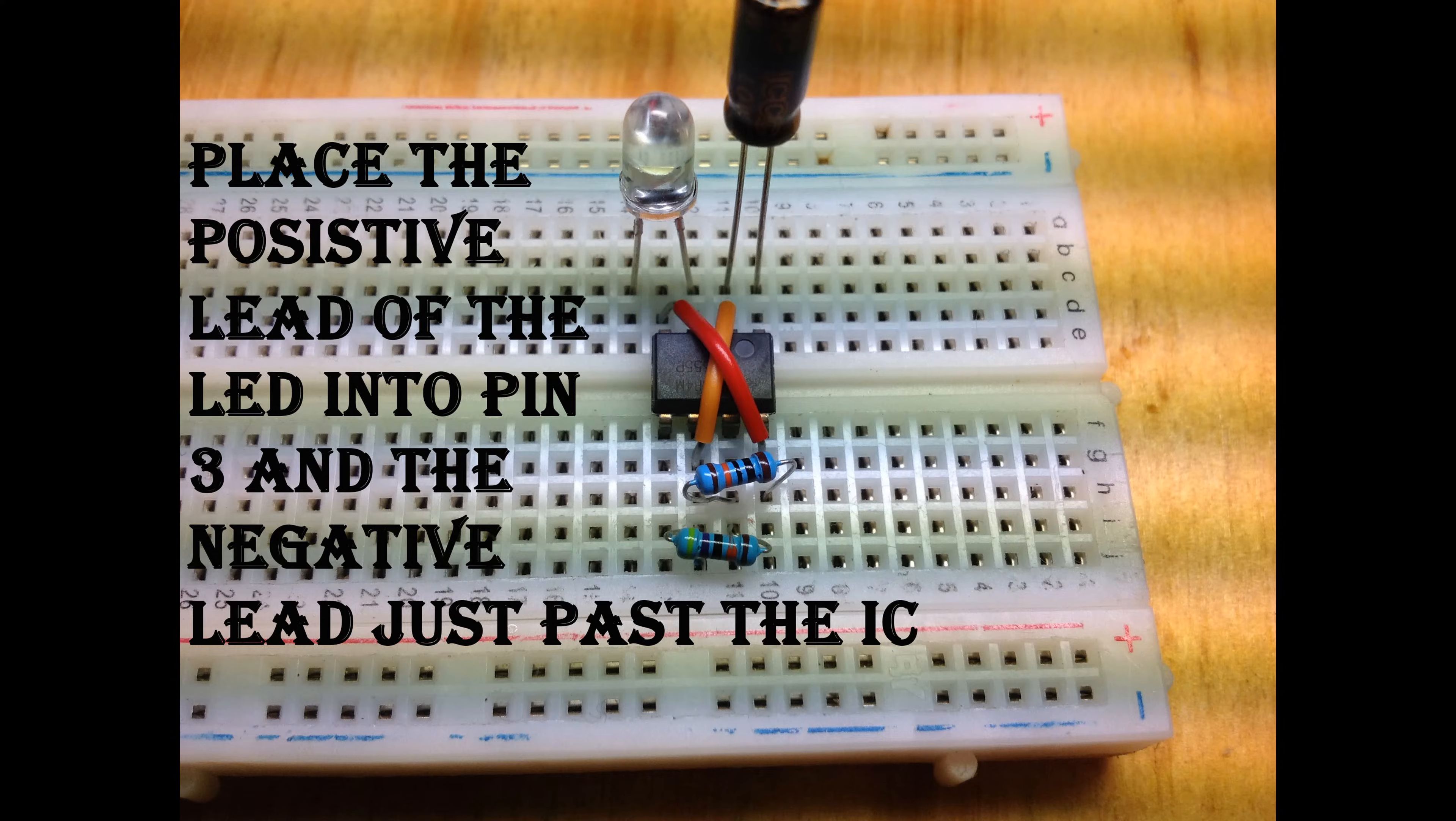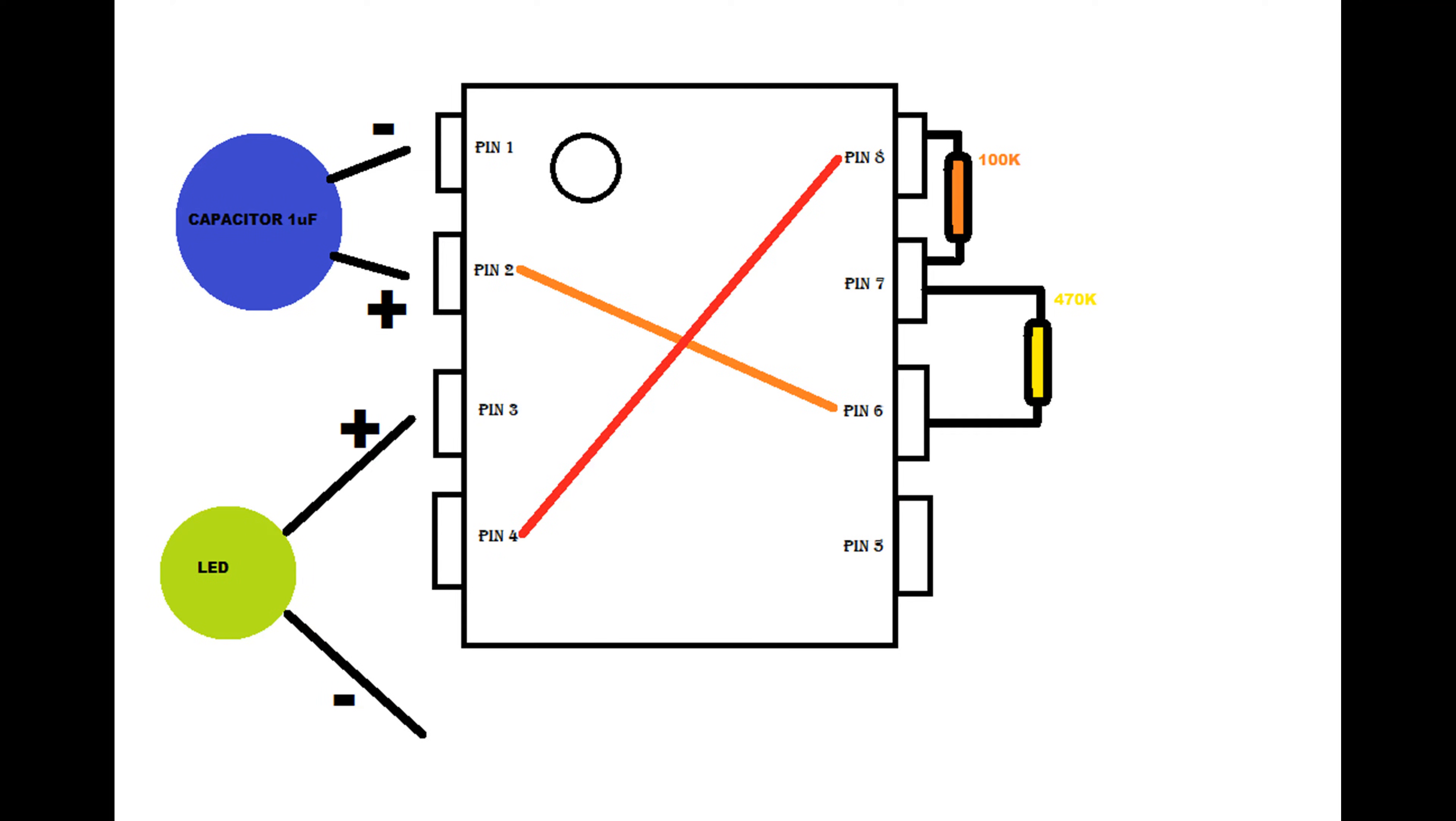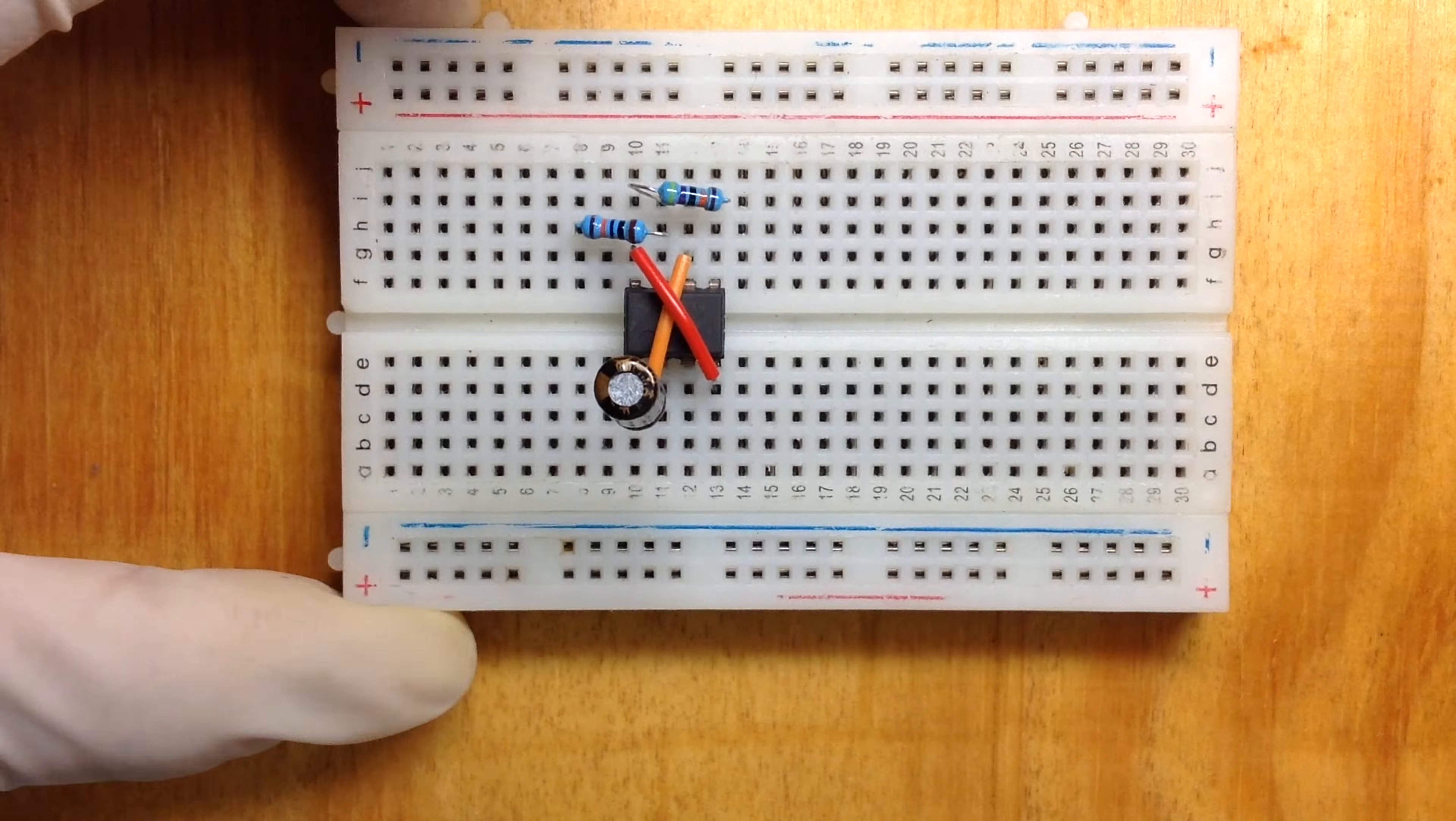Connect the positive lead of the LED to pin 3 and the negative lead to ground.